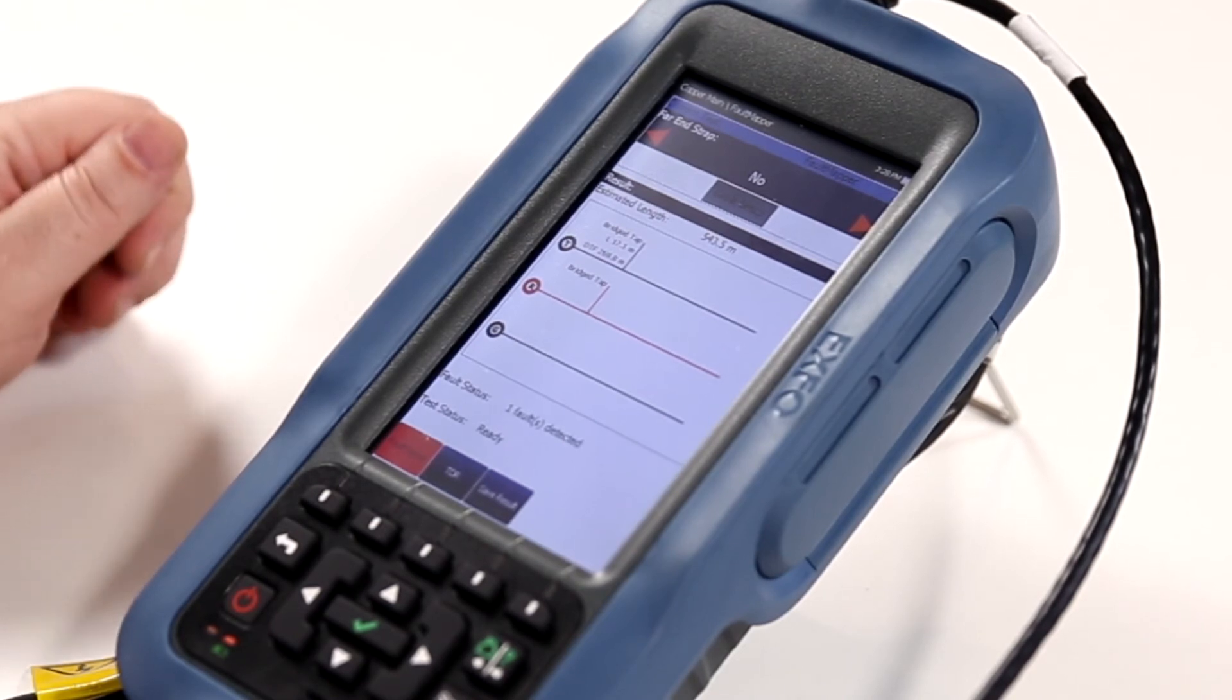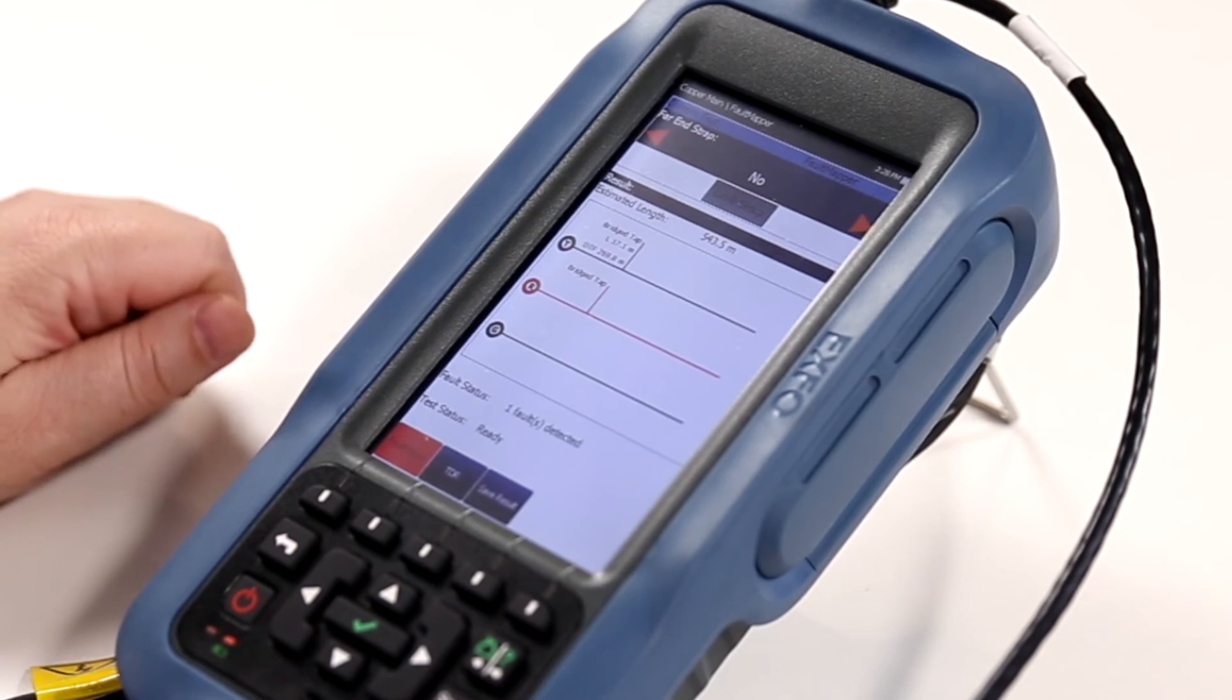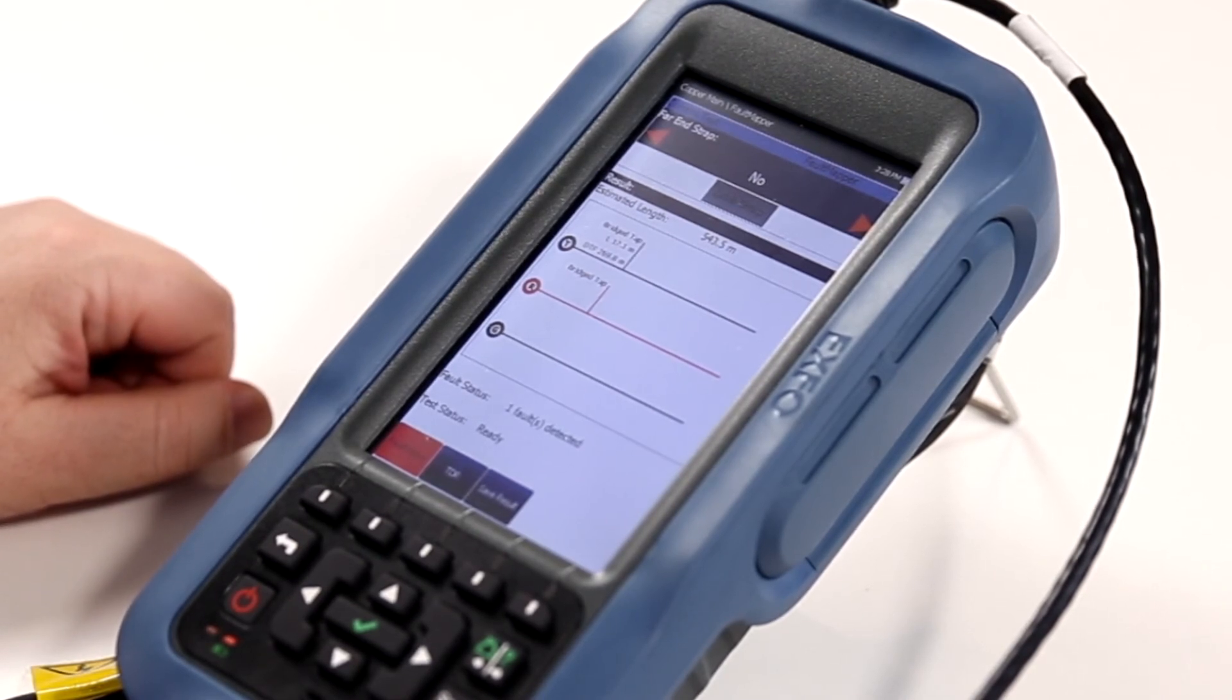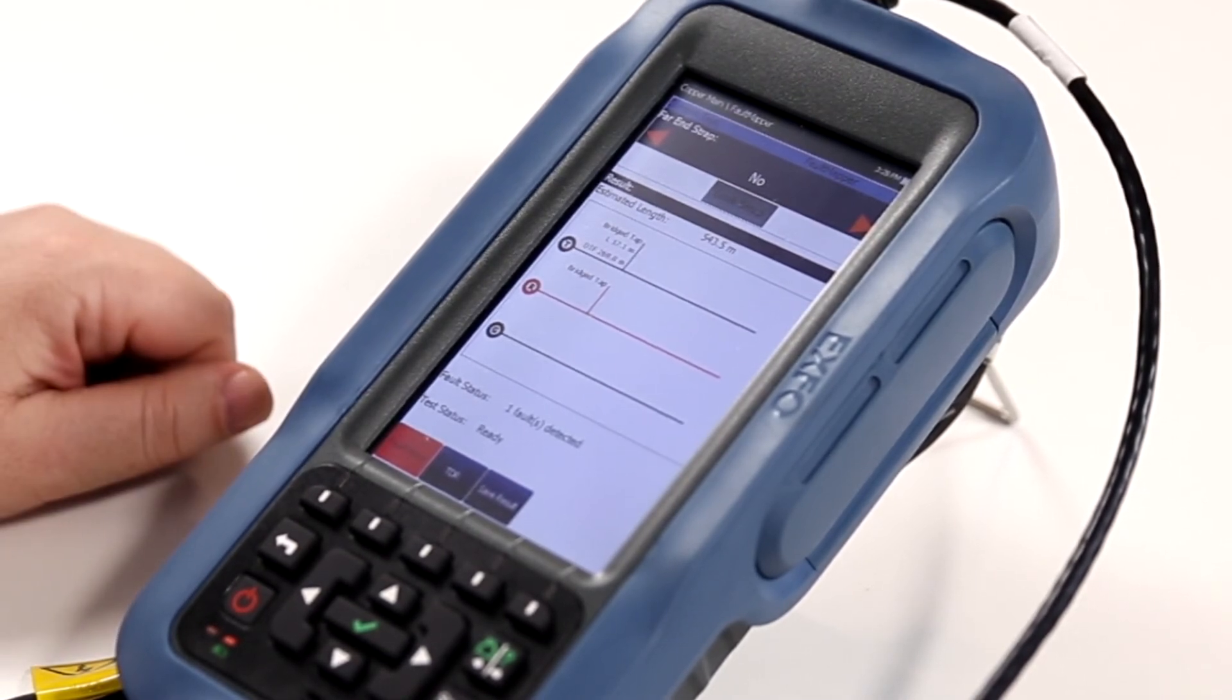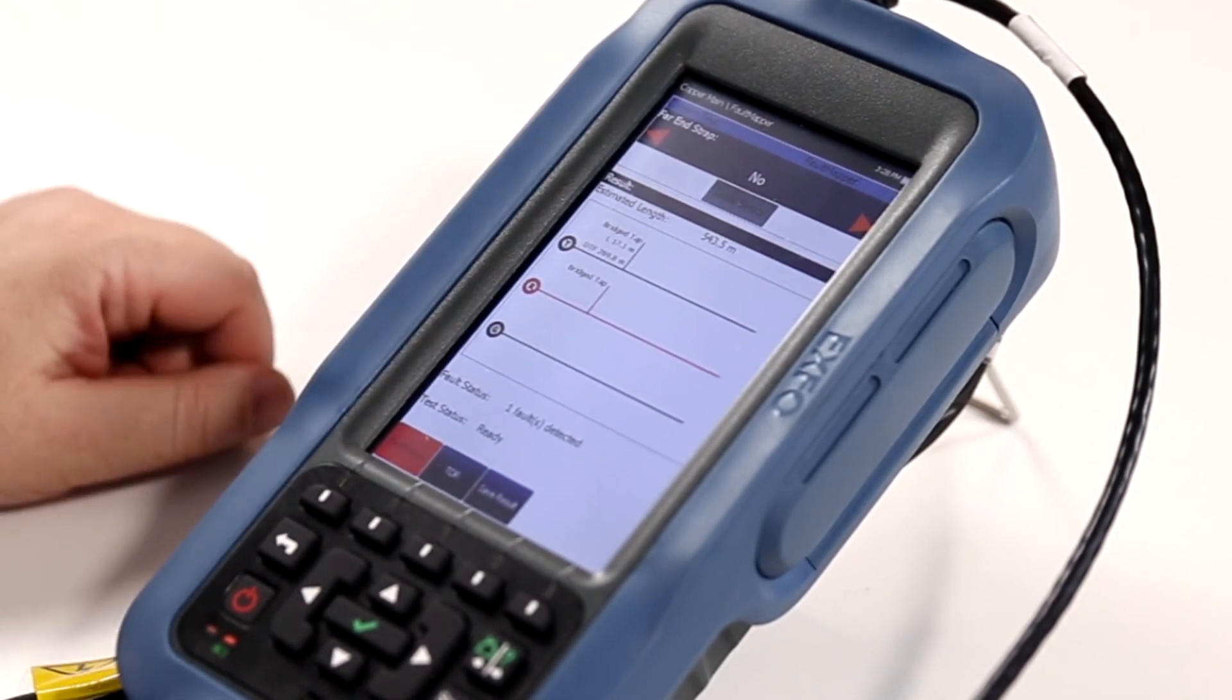Now I should note here, the MAX 635G can be configured to display distances in feet as well, depending on your particular region. Going back to the bridge tap, you can see that the bridge tap length is approximately 17 meters.